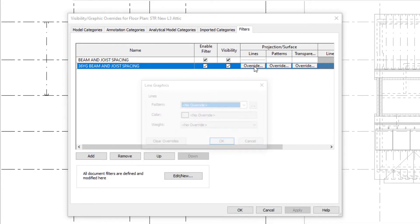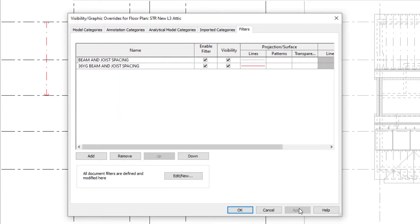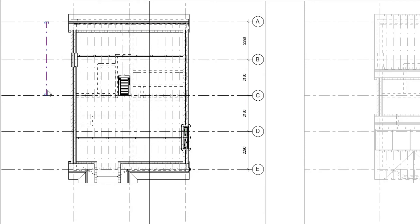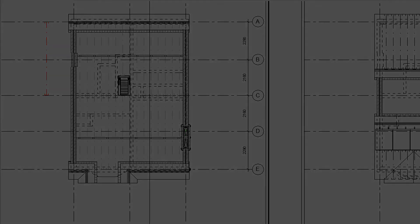We're going to change that new filter to red. You can see we used the filter to change this one to red, and the rest are still in a gray tone. This is the overall process of how to create filters for overriding items in your view. If you want other views to have the same settings, toggle into that view and apply the filter with the same settings. I hope you find this video helpful — thank you for watching.